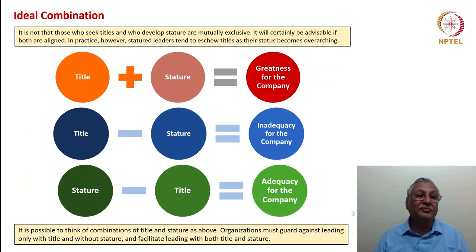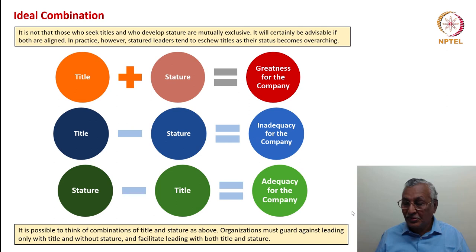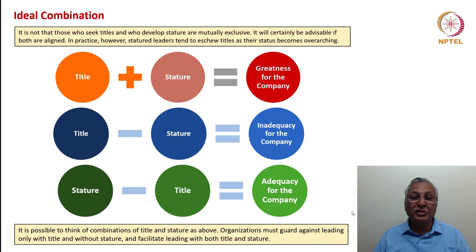The ideal combination: title with stature brings greatness for the company; title without stature brings inadequacy; stature without title brings adequacy. It is for the leaders, boards, directors, and investors of the organization to decide what kind of balance or integration between title and stature they should try for. Clearly, title along with stature should be institutionalized in the company for greatness. Organizations must guard against proliferation of title without a modicum of stature — that is going to take the company down the hill. This is true of industrial organizations, academic institutions, governments, and any other type of organization.